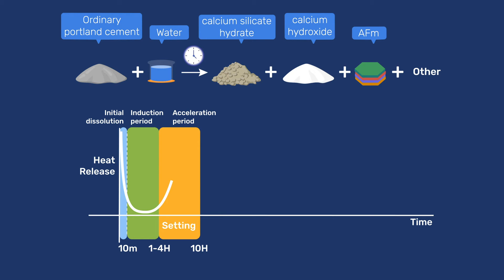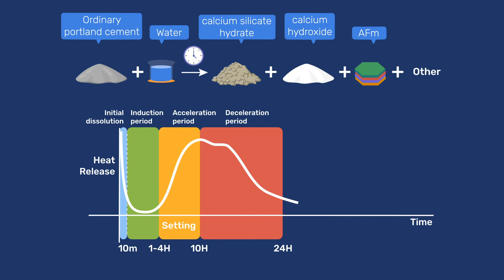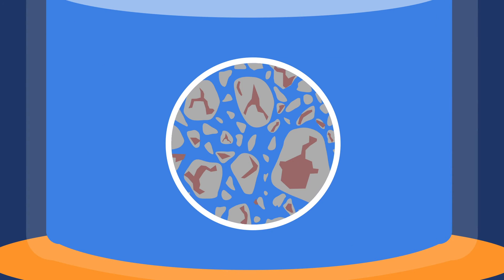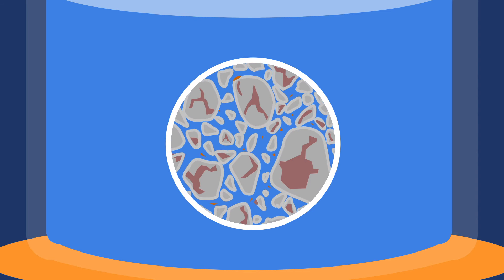During this time, the rate of CSH and CH formation increases very rapidly, up to a peak rate. Thereafter, it decelerates progressively, with about 50% of the cement having reacted after about one day for temperatures between 20 and 25 degrees Celsius. In the following days, weeks, and even months, the rate continues to decelerate. An important aspect of cement hydration concerns tricalcium aluminate, or C3A.